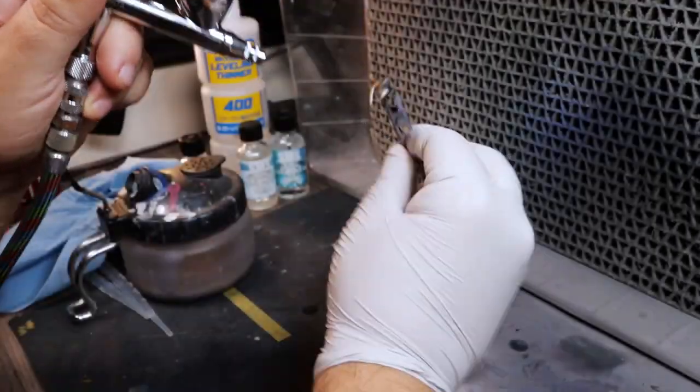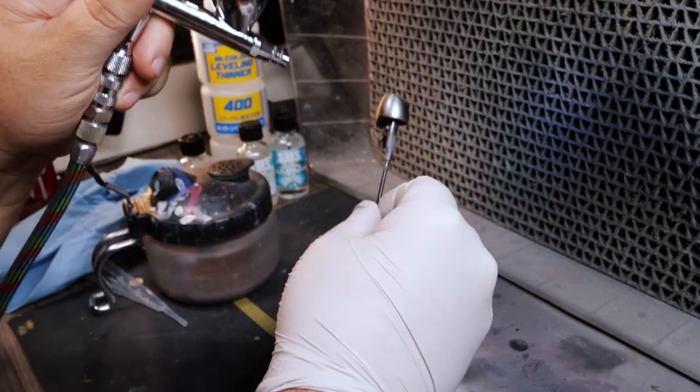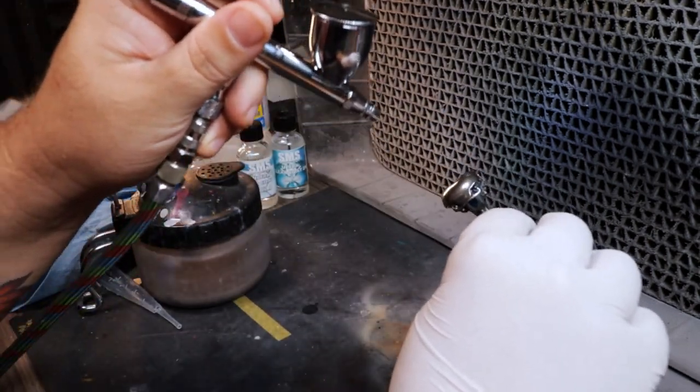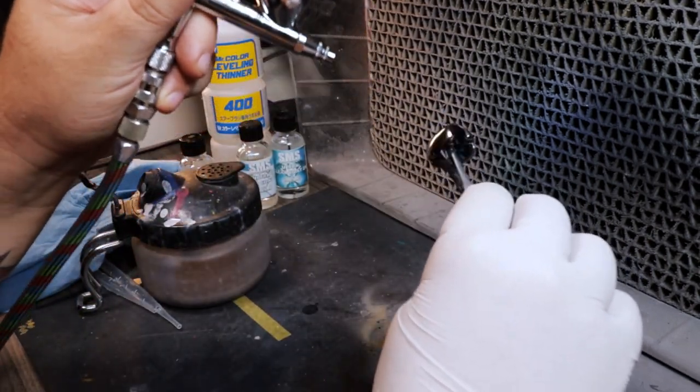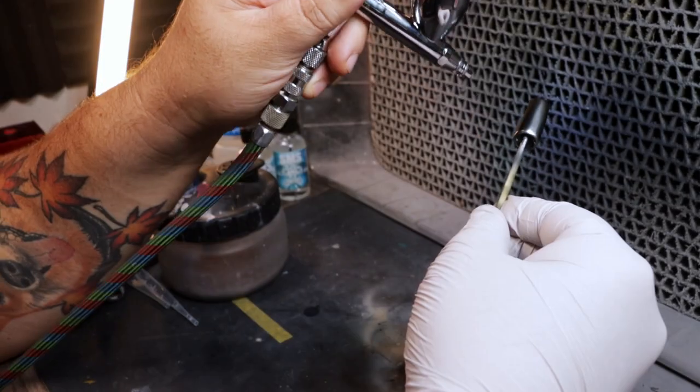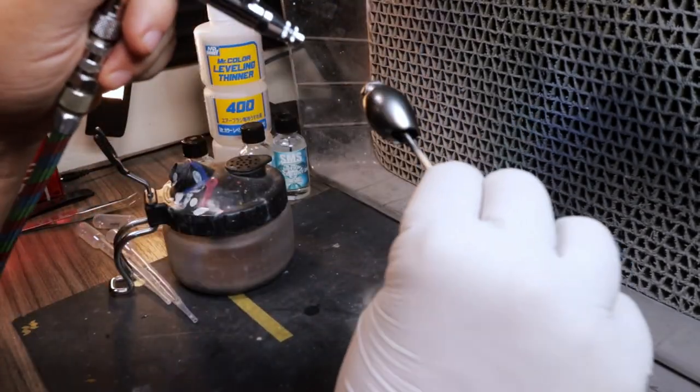The directions of the SMS paint is to go ahead and put a tacky coat first, let it cure for five minutes, then come back and apply your wet coats. I went ahead and did all my pieces with the tacky coat, then went back for that wet look so I can get that nice and shiny glossy finish.